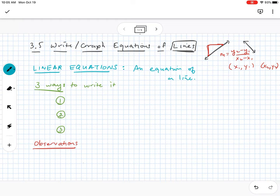Now, the equation of a line, a linear equation, there's three ways to write this. The first one is called slope-intercept form. The second type is called point-slope form. And then the third type is called standard form.